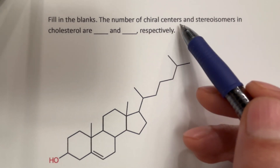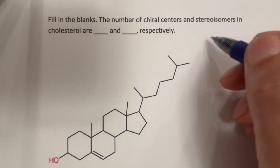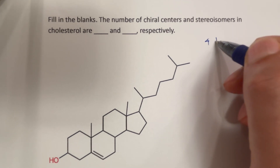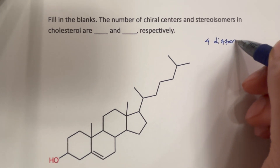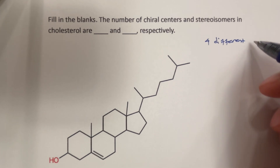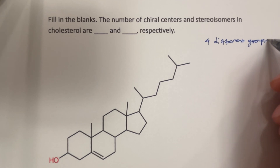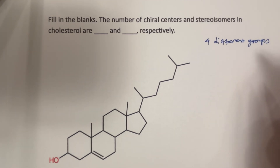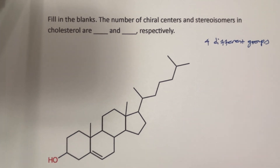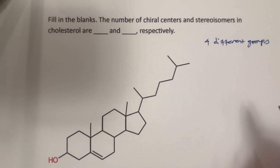When we say something is a chiral center, if a carbon atom or a hetero atom is attached to four different groups, then we can say that it is a chiral center. In this case, we do not have chiral centers that are hetero atoms — we only have chiral centers that are carbon atoms.